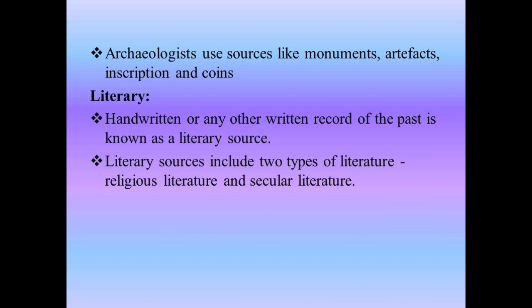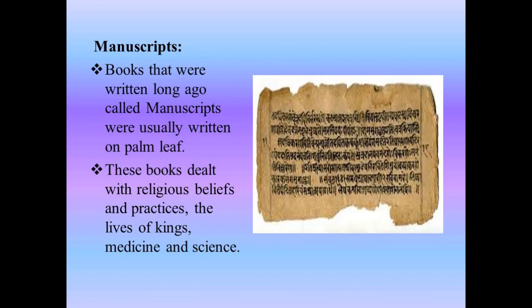A handwritten or any other written record of the past is known as a literary source. Literary sources include two types of literature: religious literature and secular literature. Manuscripts are books that were written long ago, usually written on palm leaf. These books dealt with religious beliefs and practices, the lives of kings, medicines and science.